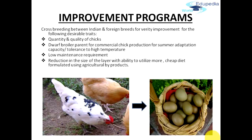Thirdly, low maintenance requirement, and lastly, reduction in the size of the layer with ability to utilize more cheap diet formulated using agriculture products. So these are the improvement programs that India has been involved in, basically done to improve the quality of chicken and eggs.